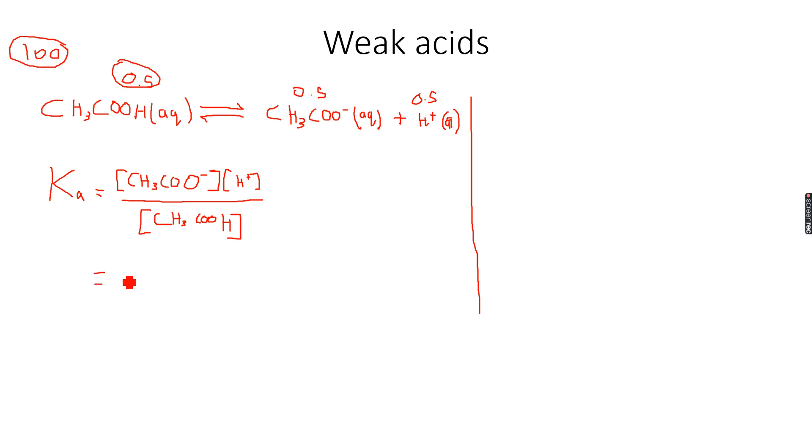When we calculate Ka, it will be 0.5 times 0.5 upon 100. If you use your calculators you can calculate this. Whatever this value is, it will be 0.25 divided by 100.